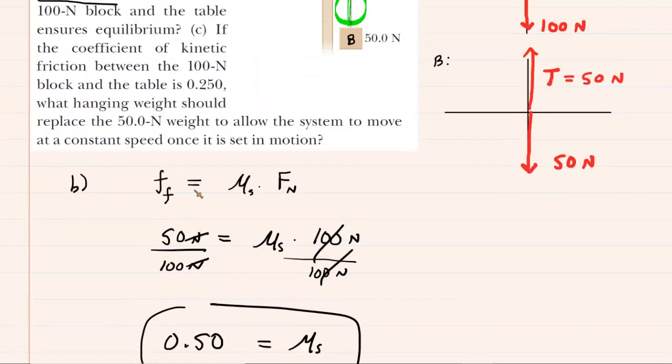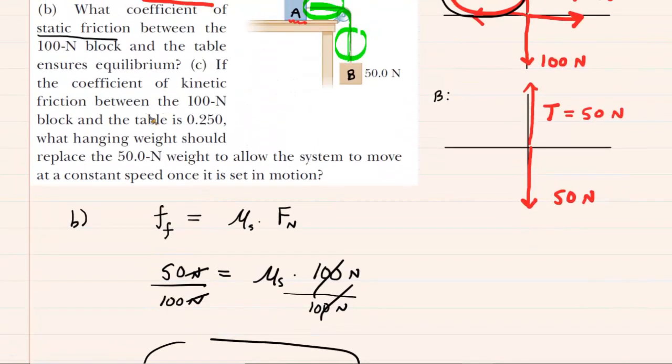Over to part C. It says, if the coefficient of kinetic friction between the 100 newton block and the table is only 0.25, what hanging weight should replace the 50 newton weight to allow the system to move at a constant speed? So this one's a little more elaborate. Why don't we go ahead and take another look at the free-body diagrams.